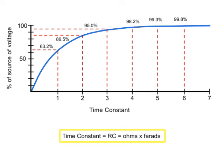A time constant in seconds is equal to the resistance of the circuit in ohms multiplied by the value of the capacitance in farads.